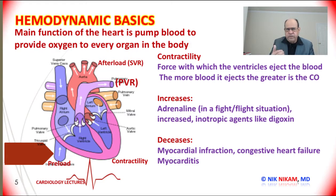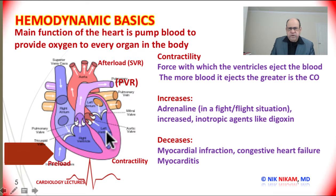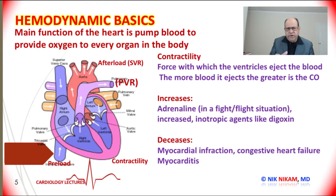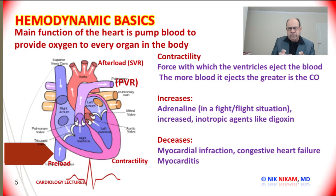We can also see similar conditions in patients with myocarditis, or patients with significant valvular problems like mitral regurgitation and aortic regurgitation. In these conditions the heart dilates and loses its pumping efficiency. When there is decreased pumping efficiency, there is a decrease in cardiac output. The pumping efficiency of the heart is one of the most significant factors reflecting how well the heart is maintaining cardiac output to supply oxygen to every organ in the body, and that is expressed as ejection fraction.